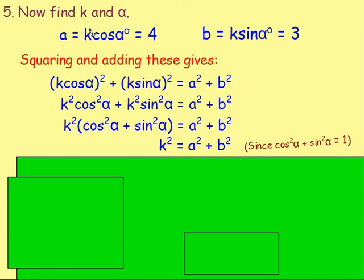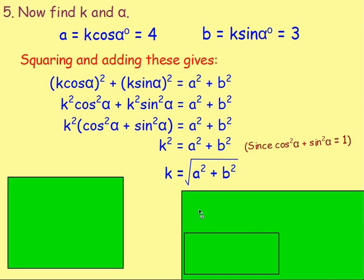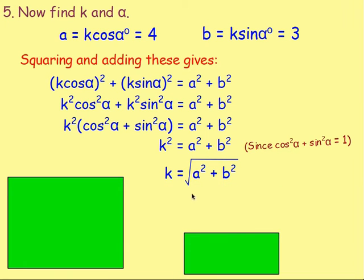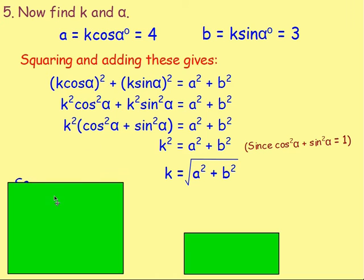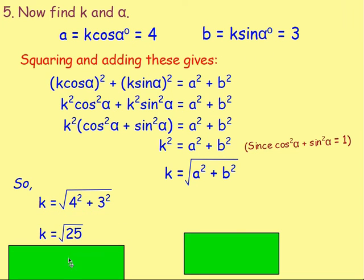And what is cos squared alpha plus sin squared alpha always, always equal to? One! So we get k squared times 1, which is just k squared, equals A squared plus B squared. Square rooting both sides: k equals the square root of A squared plus B squared. In this example, that's the square root of 4 squared plus 3 squared — the square root of 16 plus 9 — which is the square root of 25, which is 5. So k equals 5.